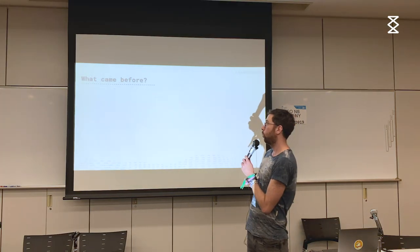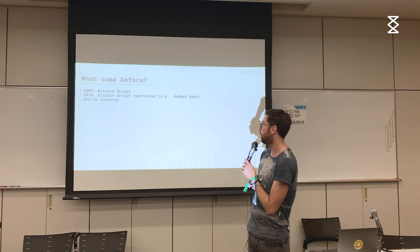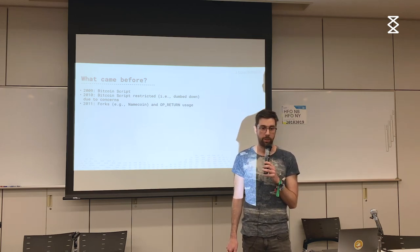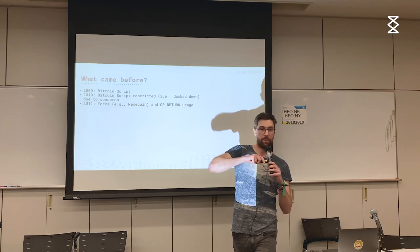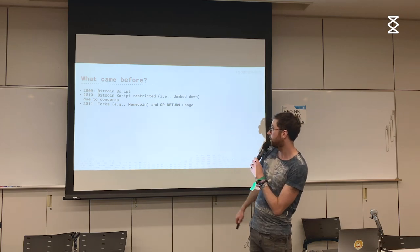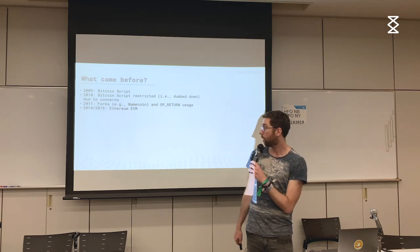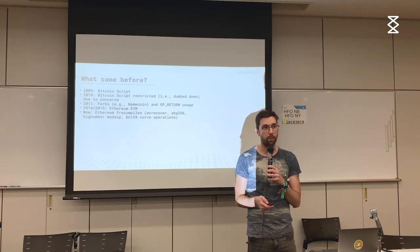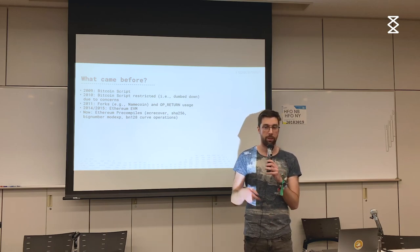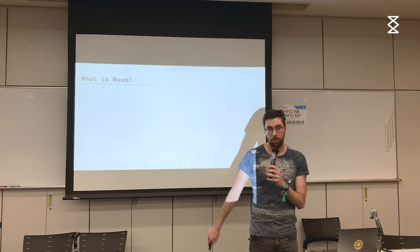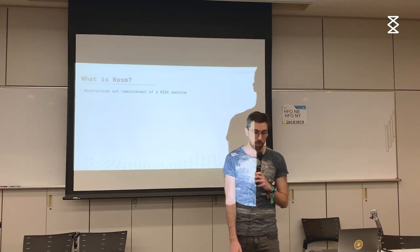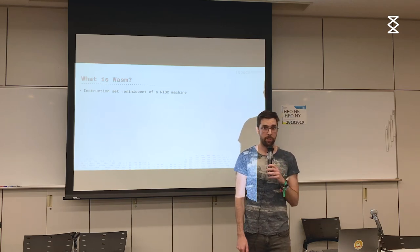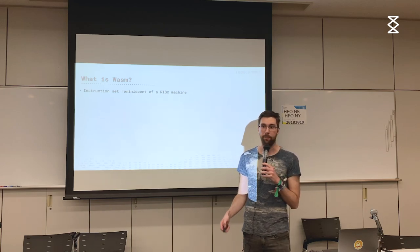Now for part two: blockchain virtual machines. Everyone knows Bitcoin Script — which got more limited a year after launch for security reasons. Then people tried to pigeonhole things into Bitcoin with OP_RETURN. Everyone knows Ethereum and the EVM. Precompiles were created because there are expensive operations like cryptography that are difficult to do in Solidity inside the VM. WebAssembly — WASM — is a new technology that's emerged over the past year or two: effectively an instruction set, a virtual machine, not a hardware instruction set.